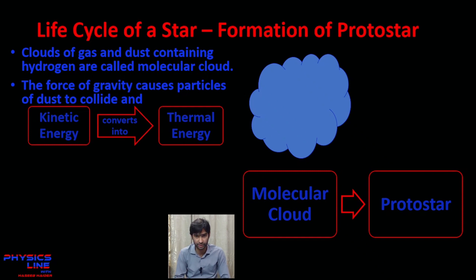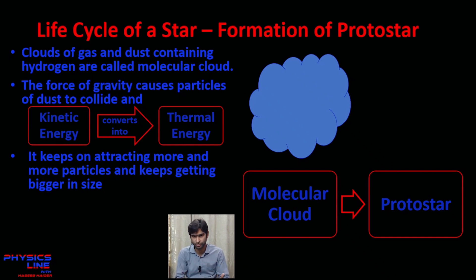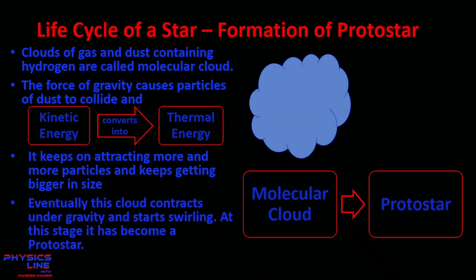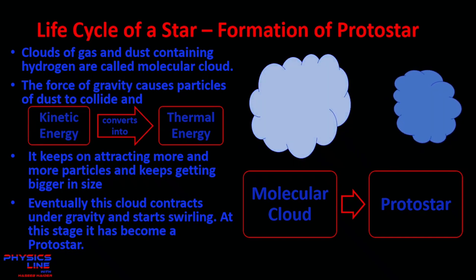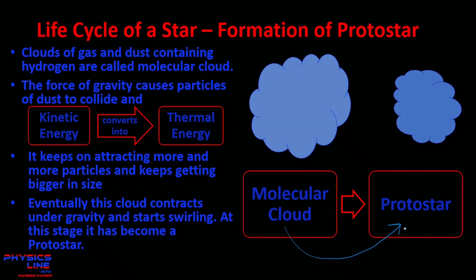When the dust particles collide, their kinetic energy gets converted into thermal energy. With time, the cloud keeps attracting more and more particles, getting bigger in size. Since greater mass means greater gravitational force, the cloud contracts under gravity and starts swirling. At this stage we say that a protostar has been formed — a swirling cloud of gas contracted under gravity.